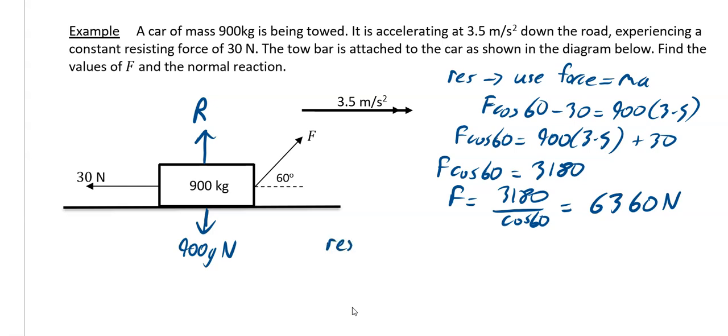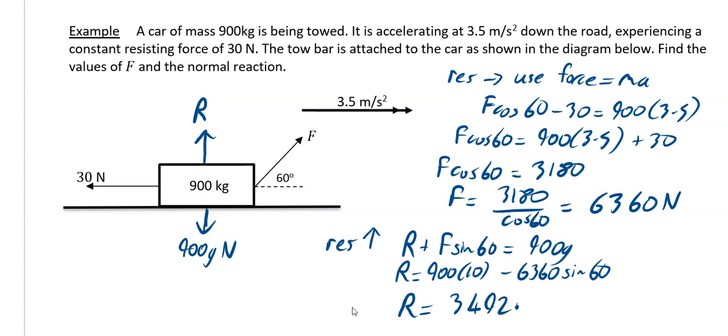To find my R, I'm going to resolve vertically. And if I resolve vertically, what I've got going up is R plus the F sine 60. And that equals my 900 G. So that means R is going to be equal to 900 times my G, which is 10, minus my F, which is 6,360 times sine 60. And after a bit of working out, my R works out to be 3,492.08 newtons to two decimal places.